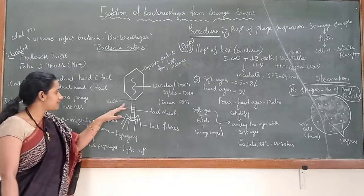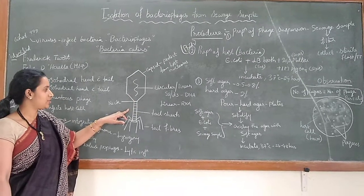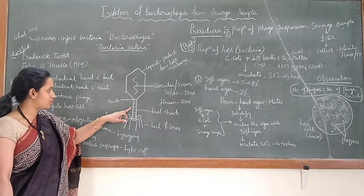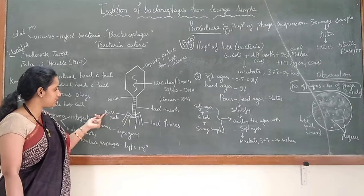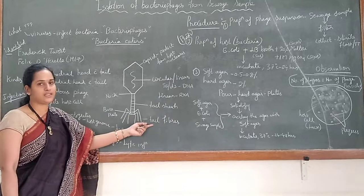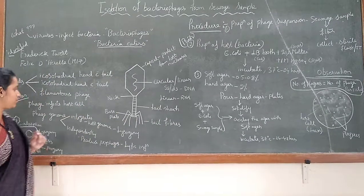Whereas coming to the next part, that is the neck, which will connect the head to the tail sheet. And you can see the long tube-like structure which is called a tail sheet. And at the base, you can see the base plate which has the tail fibers. So this is the general structure of the bacteriophage.